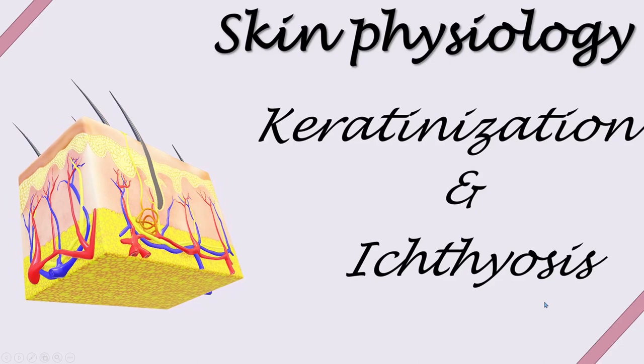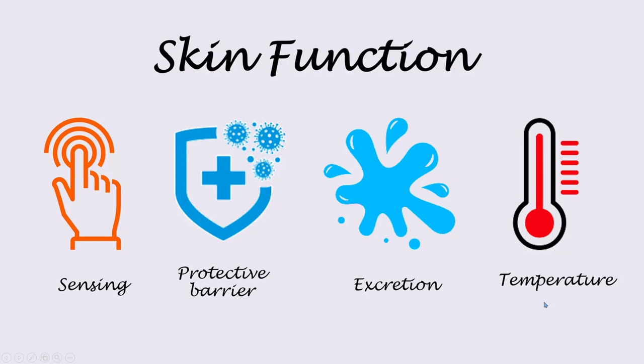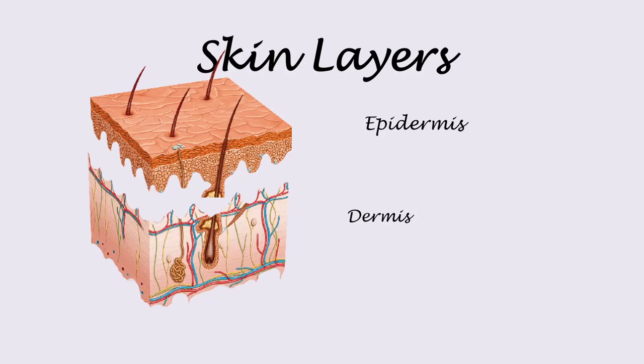First of all, our skin is considered to be in the integumentary system. Its functions include sensing, protection, excretion and temperature regulation. There are three main layers of the skin: the epidermis on the topmost or superficial part, the dermis in the middle, and the subcutaneous on the bottom.